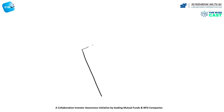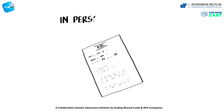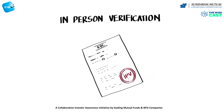Before Anurag can submit the KYC form, a registered intermediary, as per rules, should have done an in-person verification of his address and identity and certified it. If he routes his application through a mutual fund distributor, such a distributor can certify the IPV. Else, he can ask his bank to certify that IPV has been done.